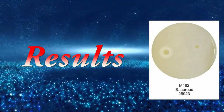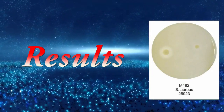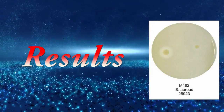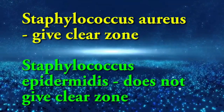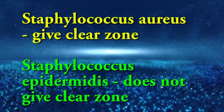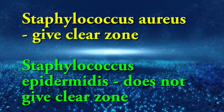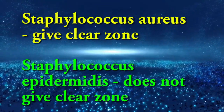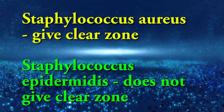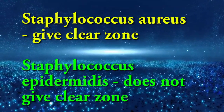Results: Staphylococcus aureus gives a clear zone around the colony, and Staphylococcus epidermidis does not give a clear zone.